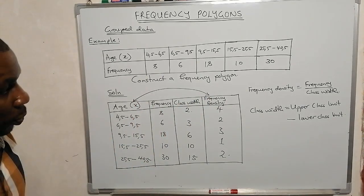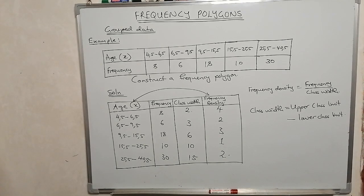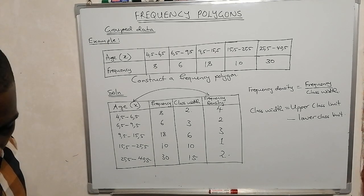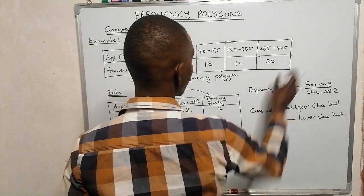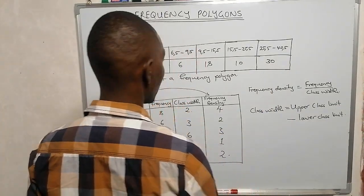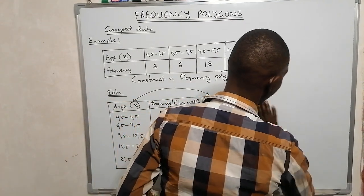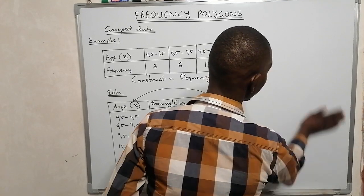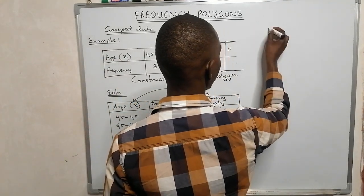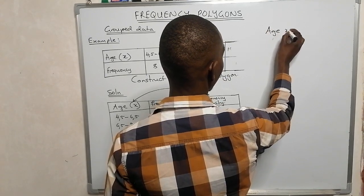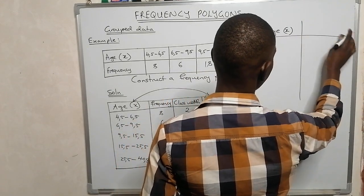We are going to plot a histogram using age and frequency density only. Because of space, we write age and frequency density as the axes for our histogram.